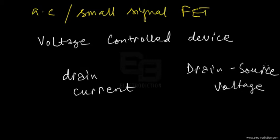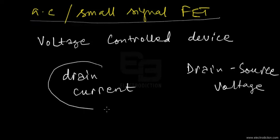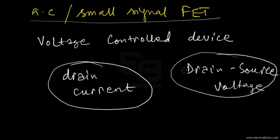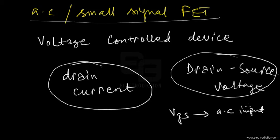The answer is quite plain and simple. The FET, while working in AC or small signal operation, controls both the drain current as well as the drain-source voltage, utilizing the input across its gate-source terminals. So whenever we're applying an input AC signal at the input terminals of the FET, it's referred to as V_gs — the AC input signal across the gate and source terminals — irrespective of whether it's a JFET or a MOSFET.